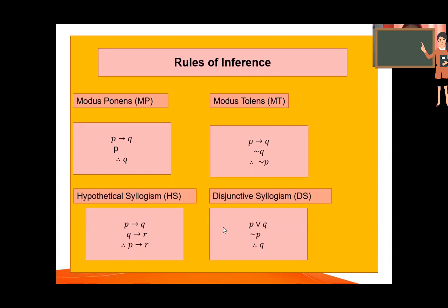First is modus ponens. What is modus ponens? We have here the given premises and the conclusion. For modus ponens, we have P implies Q, P, therefore Q. The three dots here represents the conclusion. That's modus ponens.